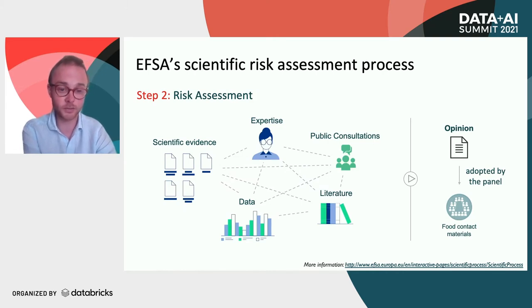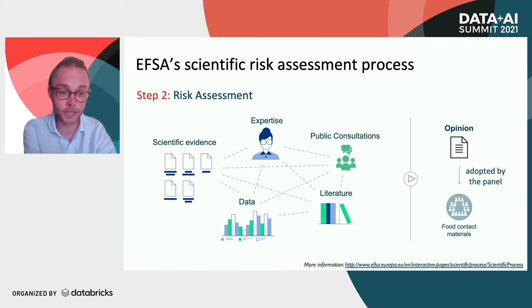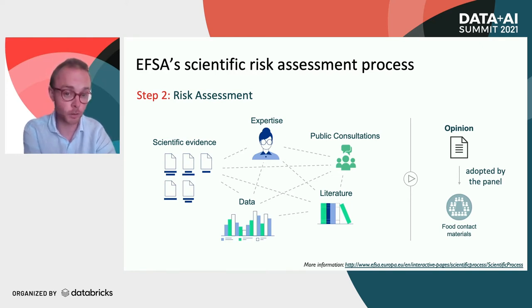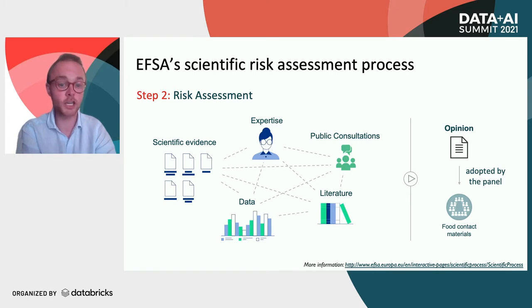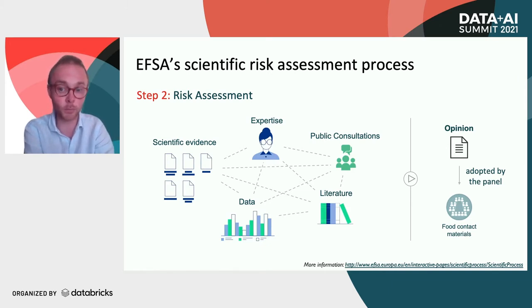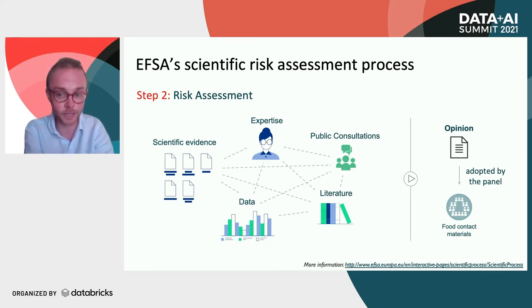The second part in the process is the actual risk assessment itself. A lot of data is used to perform such an assessment: scientific evidence typically coming in via dossiers that applicants and organizations submit to EFSA, containing documents and information; the expertise of the experts themselves; literature studies; and also public opinion — sometimes EFSA launches public consultations to ask feedback from the public. All that information is used to eventually come up with the scientific advice. The outcome of a risk assessment is called the opinion or output, which starts in draft, goes through meetings and feedback rounds, and is eventually adopted by the relevant panel.